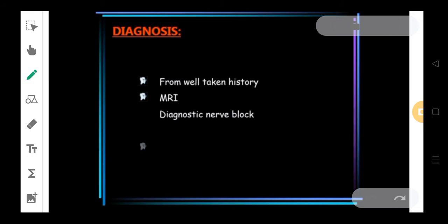How can you diagnose this particular condition? A well-taken history is something you can go for. Another thing is you can go for MRI also. If you know the full form of MRI, do let me know in the comment section. We have diagnostic nerve block.